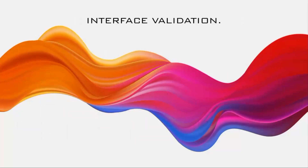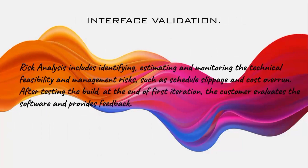The fourth phase is interface validation. This is where you validate the particular project to identify and overcome risks. It also ensures that the customer evaluates the software and provides feedback. It is not just enough to execute the software project internally — you must also execute and validate it from the customer's perspective. That is the main purpose of this phase.